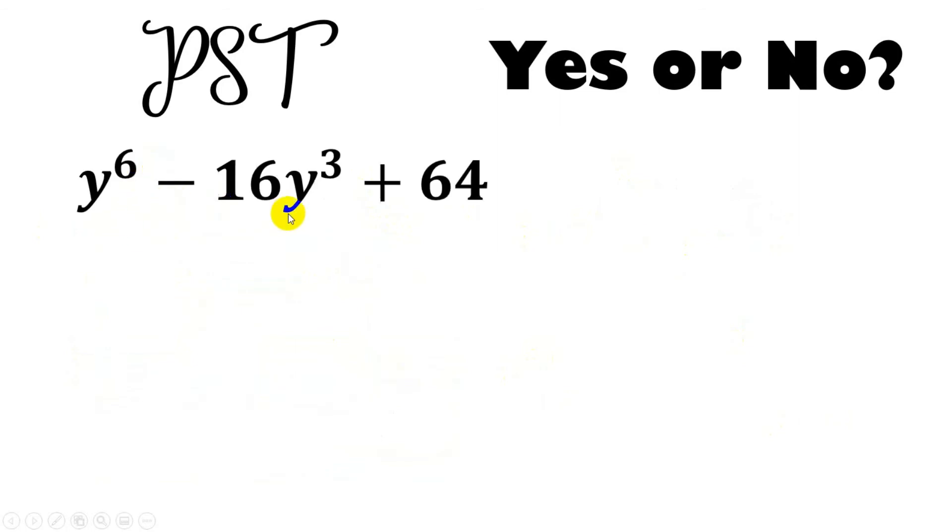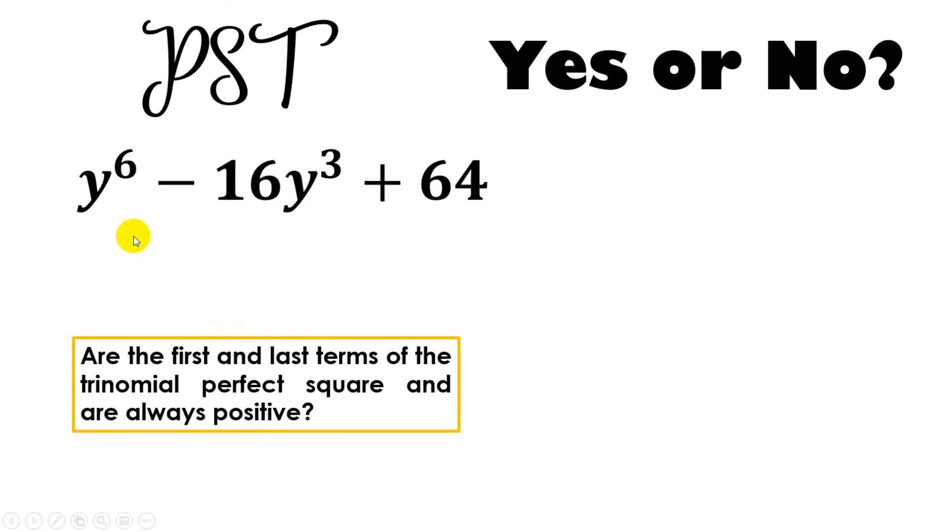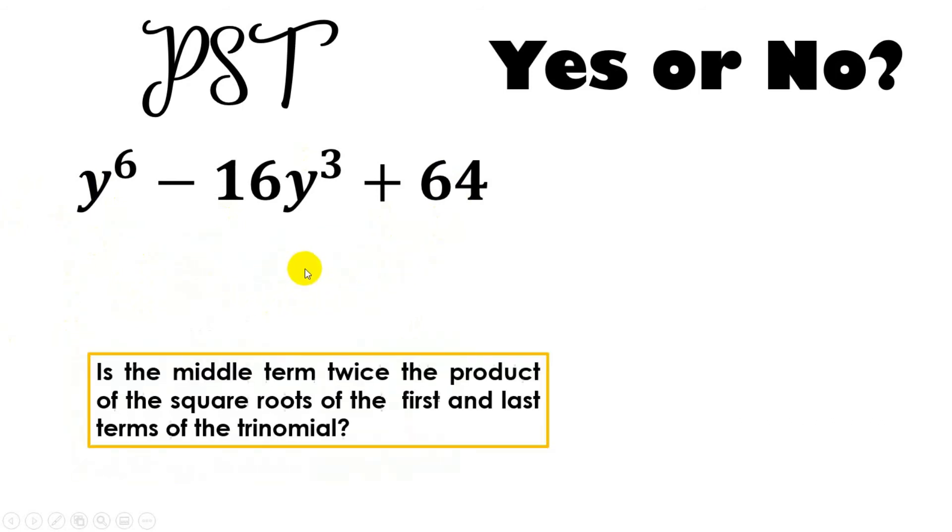Next, y to the 6th power minus 16y cube plus 64. First condition, does the first term have a square root? Does the last term have a square root? The answer is yes. And then, are they both positive? Also, the answer is yes. Now, for the second characteristic, let's check if the middle term satisfies that characteristic. Get the square root of the first term, that's y cube.